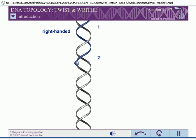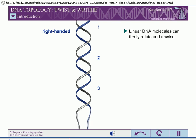Each of the chromosomes of eukaryotes is comprised of a single, linear DNA molecule. Because their ends are free, linear DNA molecules can freely rotate to change the number of times the two chains of the double helix coil about one another.